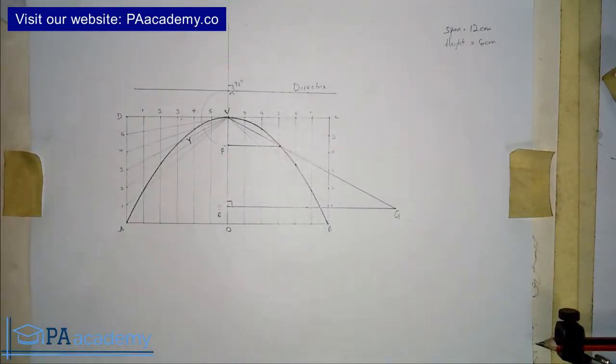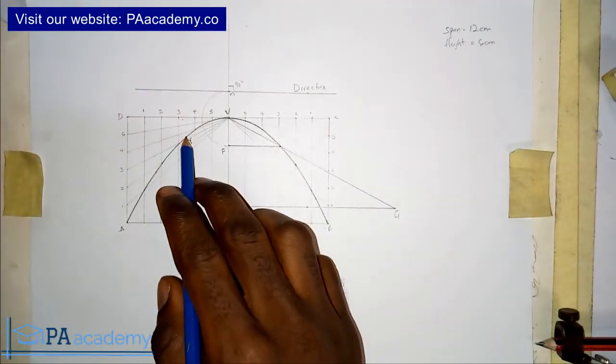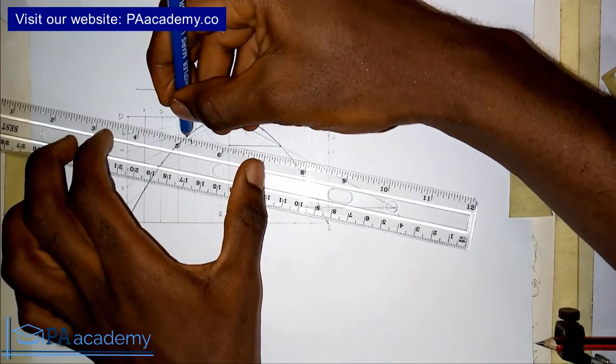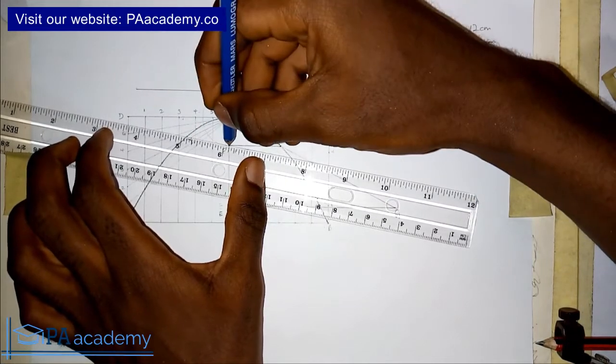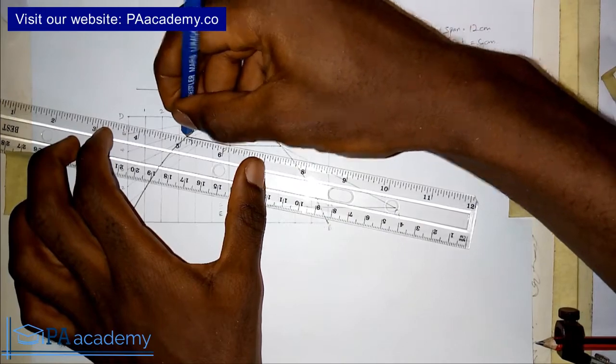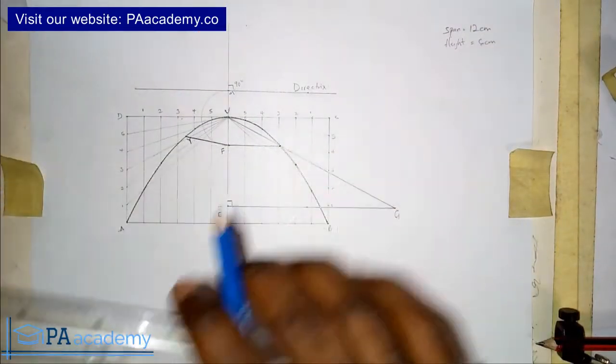So what we are going to do is, we are going to draw a line from point Y to point F, which is the focus. So we already have that line.